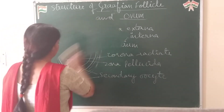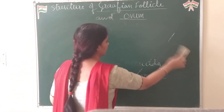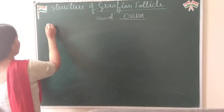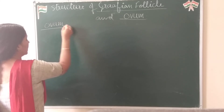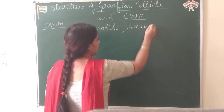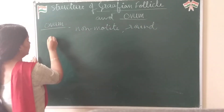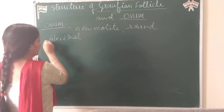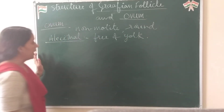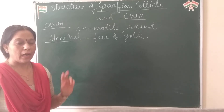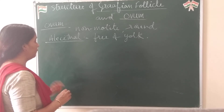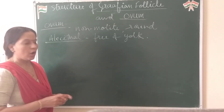Now we will see what is the structure of ovum. In human beings, ovum is non-motile, it is rounded in shape, and it is alecithal. Alecithal means it is free of yolk. Ovum is covered by two membranes on the external side — corona radiata and zona pellucida — and one of its own membranes called the oolemma or plasma membrane.